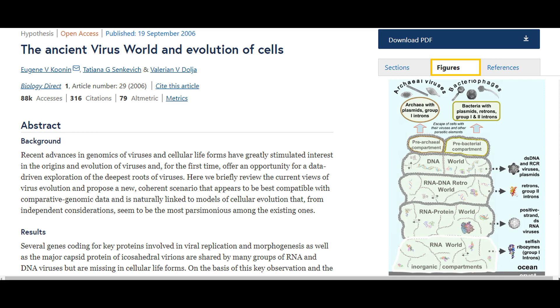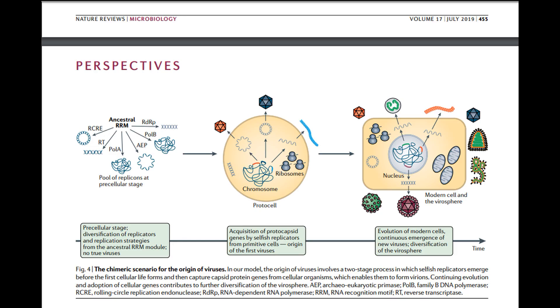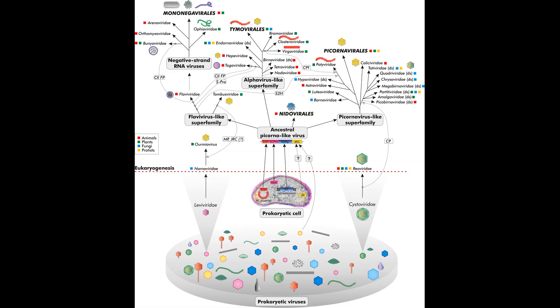A 2006 paper points out that viruses likely preceded the evolution of true cells, since viruses contain genes that aren't present in any modern organisms. In an opinion paper published in Nature in May 2019, Krupovic et al. proposed a chimeric scenario for the origin of viruses, wherein the first viruses evolved in two stages: first, self-replicators emerged before cellular life, which later captured capsid protein genes from cellular organisms, giving them the ability to form virions. This continuing process of capturing cellular genes contributed to further diversification of viruses.